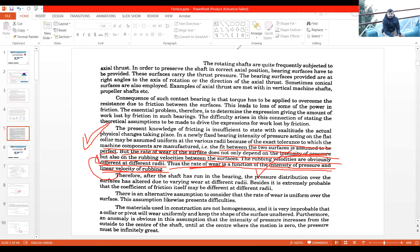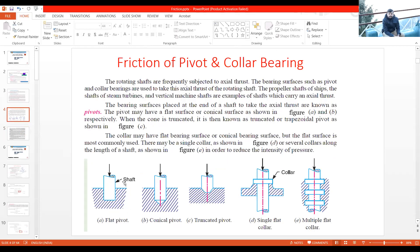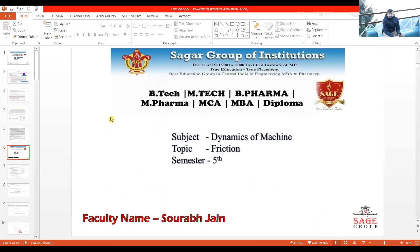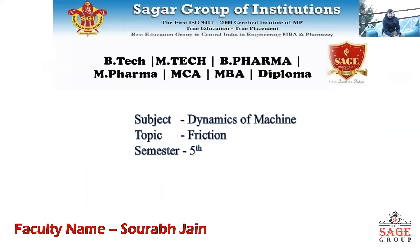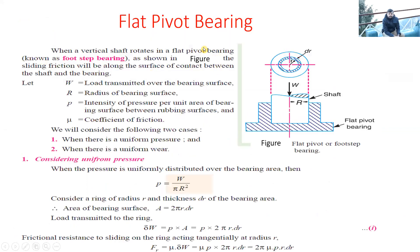To conclude: we use uniform pressure theory when the bearing surface is new, and uniform wear theory when the bearing surface has become old after running for some time. In today's class, we will discuss the flat pivot bearing — also called footstep bearing — and derive the equation for frictional torque and power lost due to friction using both theories. The hatched portion in the figure represents the bearing and the solid portion represents the shaft.